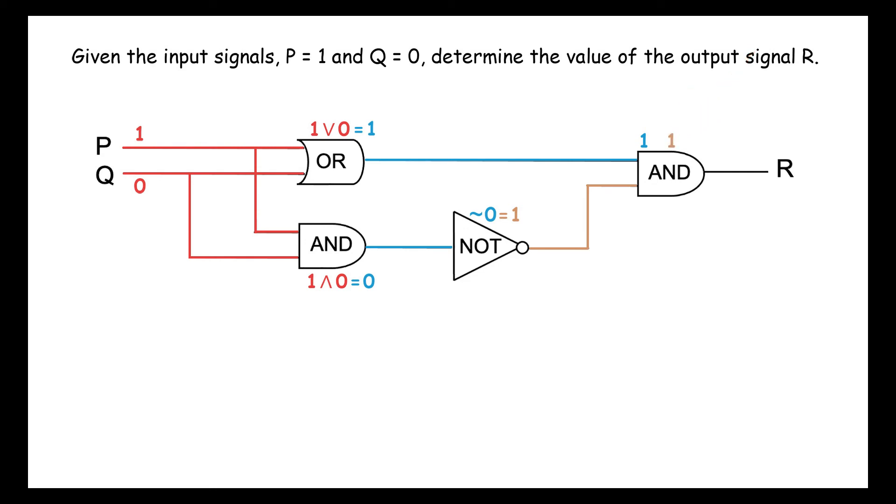Then, for the second AND gate, we have 1 and 1 equals 1. This is the last gate, so the output signal R equals 1.